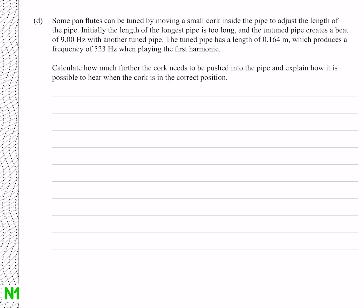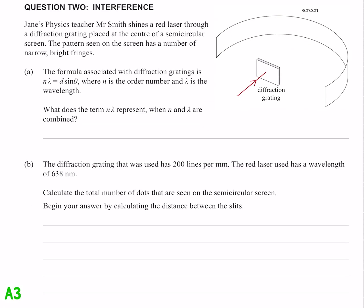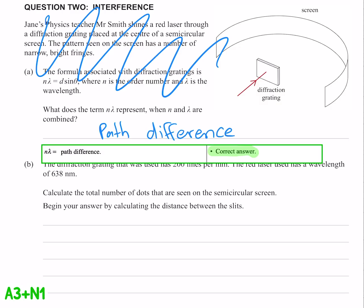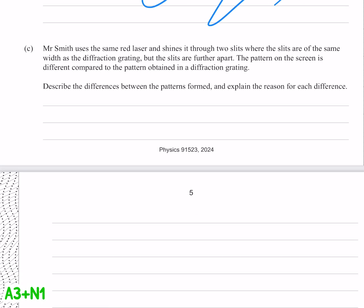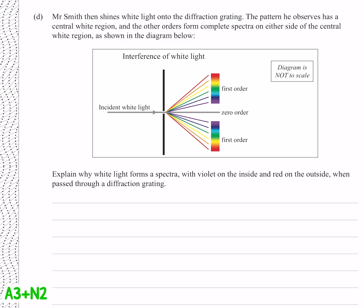For question D, looks like we've got a question about beats. Calculate how much further the cork needs to be pushed into the pipe, and explain how it's possible to hear when the cork is in the correct position. Well when the frequency gets closer, the beat's gonna get slower. And with that we'll just move straight on to question 2. And we'll just skip all the preamble. What does the term n lambda represent? Path difference. If Mr. Smith is shining a red laser between two slits and a diffraction grating, describe the differences between the patterns formed and explain the reason for each difference. The two slits have less gaps than the diffraction grating, and so we can say the two slits are gonna be dimmer. For question D we've got a lovely rainbow pattern, and I'm sure we could launch into a big ol complicated explanation of why this occurs, but let's just leave it at red wavelength longer.